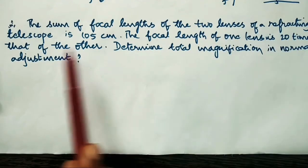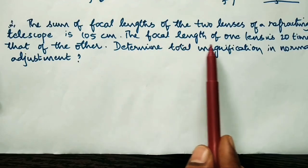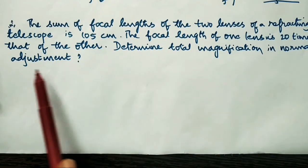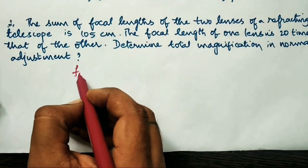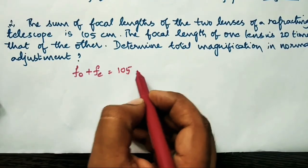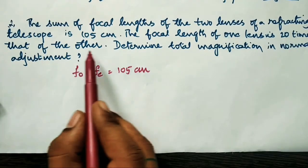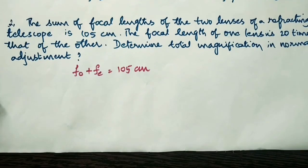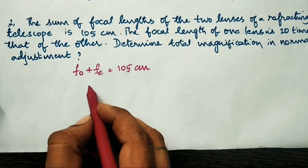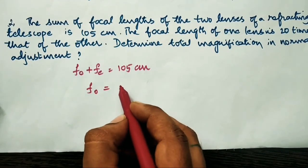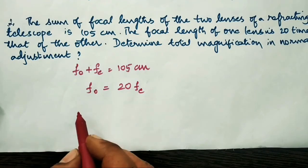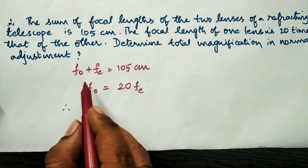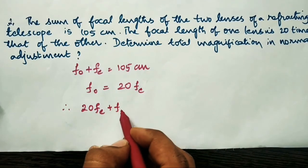For the second question: the sum of the focal lengths of two lenses of a refracting telescope is 105 cm, and the focal length of one lens is 20 times that of the other. We are to determine the total magnification in normal adjustment. We know fo + fe = 105 cm. Since the objective has greater focal length, fo = 20·fe. Substituting: 20·fe + fe = 105, which gives 21·fe = 105.